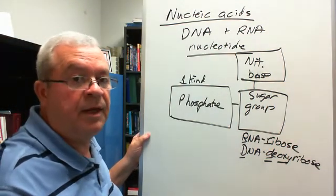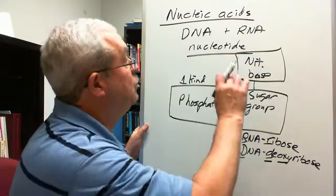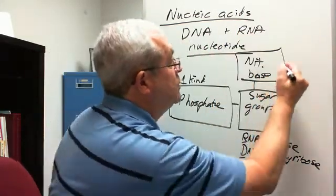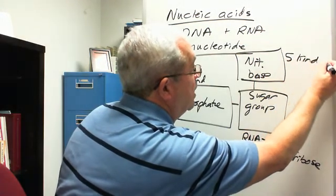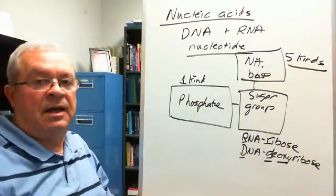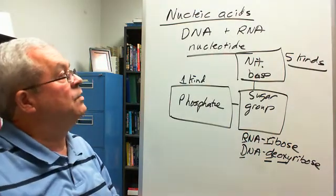And the only thing I will say at this point is, between DNA and RNA nucleotides, there are a grand total of five kinds of nitrogenous bases.